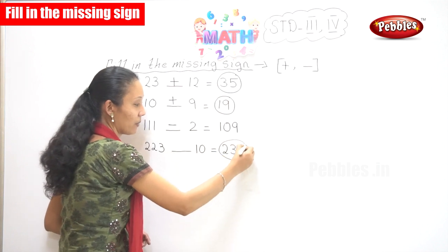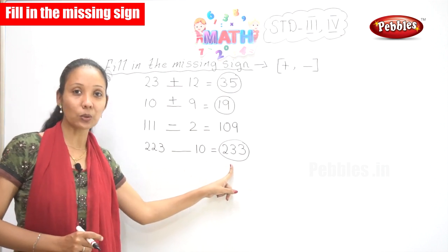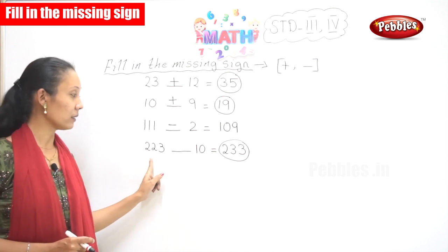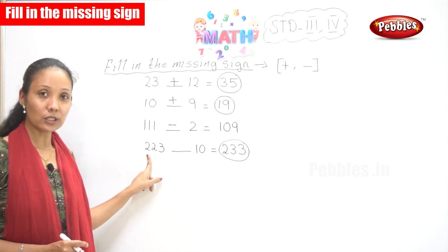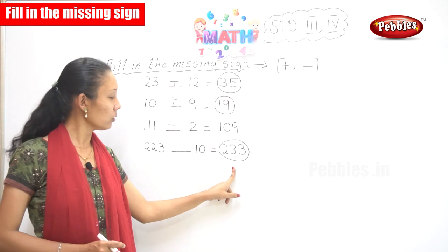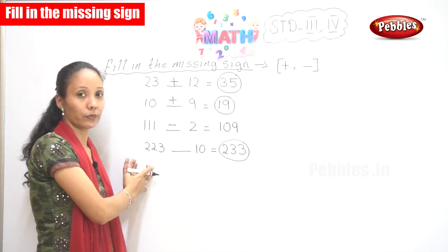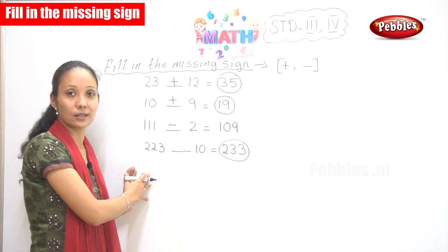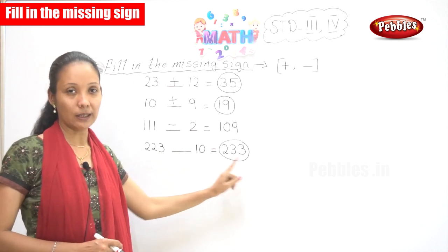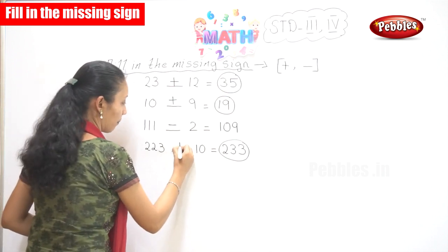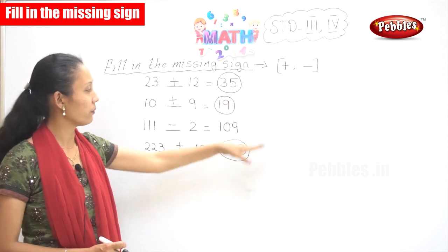Now it is 223 dash 10 is equal to 233. First you need to see if your answer has increased from your first number or decreased. The answer 233 is greater than 223. Did you add 10 with 223 or did you minus it? Yes, you have been adding it — you have not subtracted. That's why you have got a bigger number, so the sign is plus.